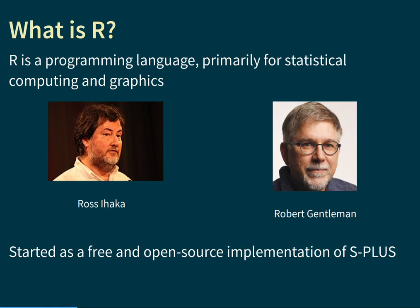R was originally designed in the early 1990s by Ross Ihaka and Robert Gentleman. To understand where they came from and what they modeled their design on, we have to go back to the mid-1970s, when a language called S was developed at Bell Laboratories — S for statistics — because that language was really designed to aid statistical computing.